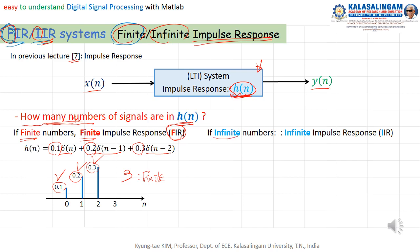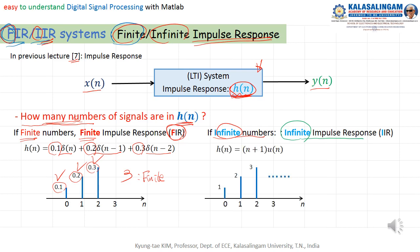On the other hand, if the number of signals is infinite, we call this Infinite Impulse Response — IIR. For example, H(N) equals N plus one, for N from zero going up: at N equals zero it is one, N equals one it is two, N equals two it is three, and so on — N goes to infinite. So H(N) has an infinite number of signals. Therefore, the number of signals is infinite, and we call this IIR — Infinite Impulse Response.